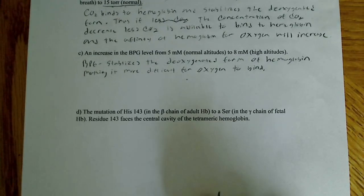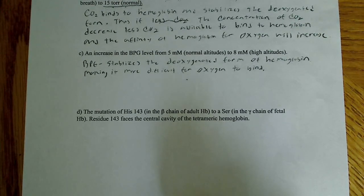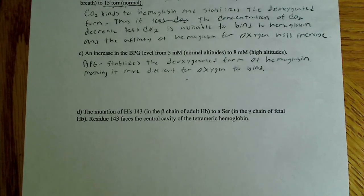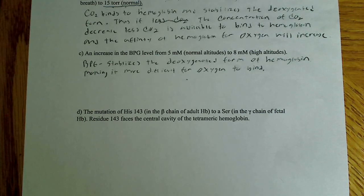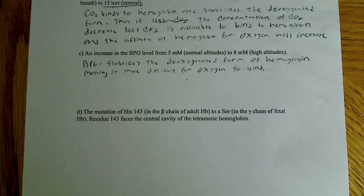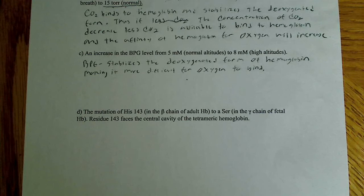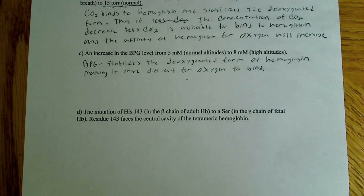The last one says the mutation of histidine 143 to serine in the gamma chain of fetal hemoglobin. Residue 143 faces the central cavity of the tetrameric hemoglobin. We're changing histidine, which is polar, to serine, which is also polar — but histidine can accept a proton and become positively charged, whereas serine does not accept an additional proton to become positive.